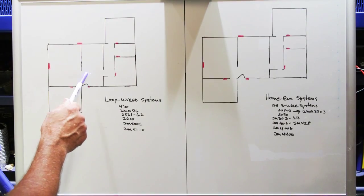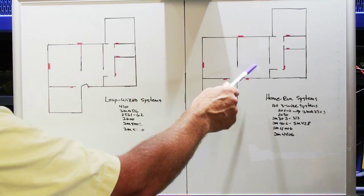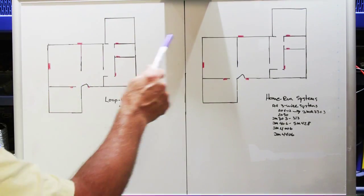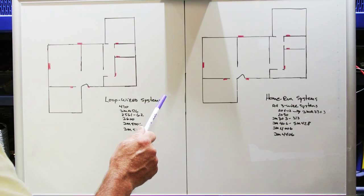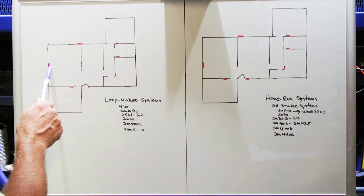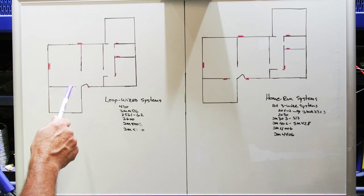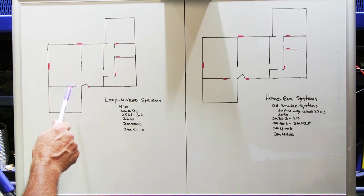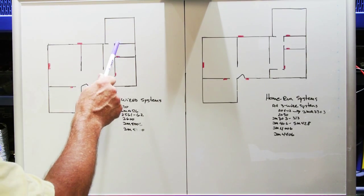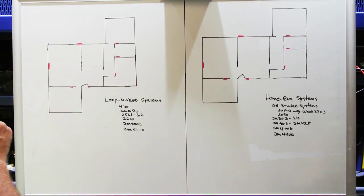Here we have an example of two virtually identical homes and they each have the same number of intercom stations. You have a master station in each kitchen, you have a front door speaker, you have four inside stations and a patio station.